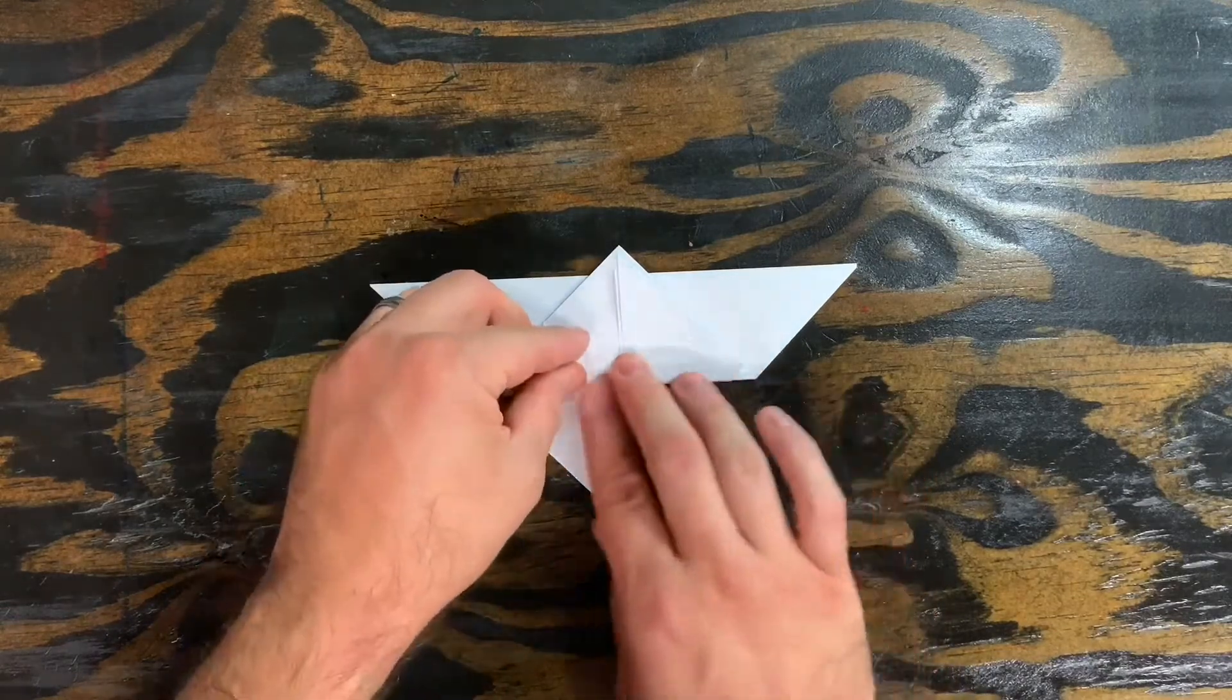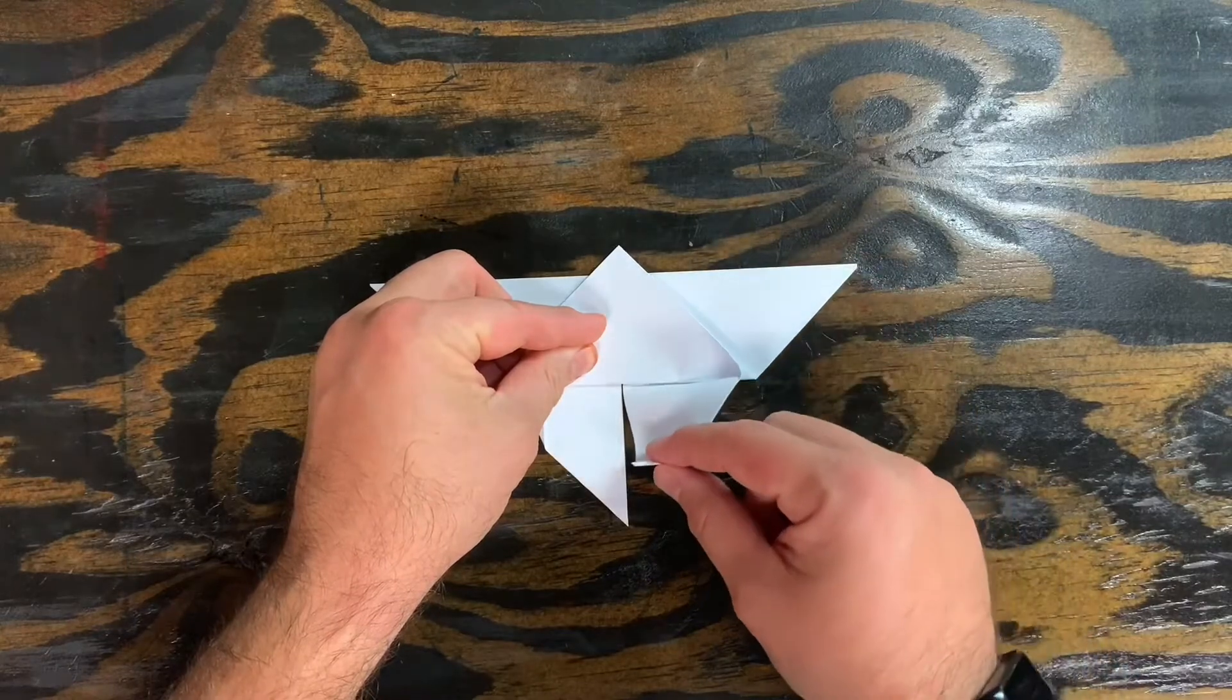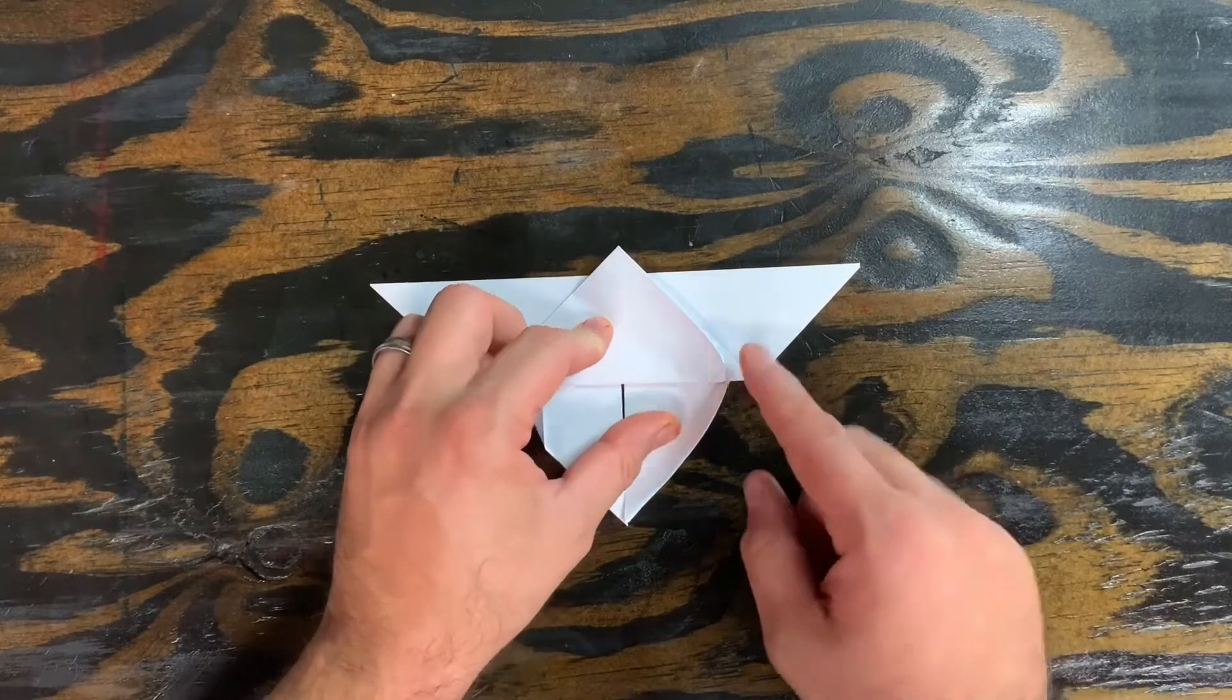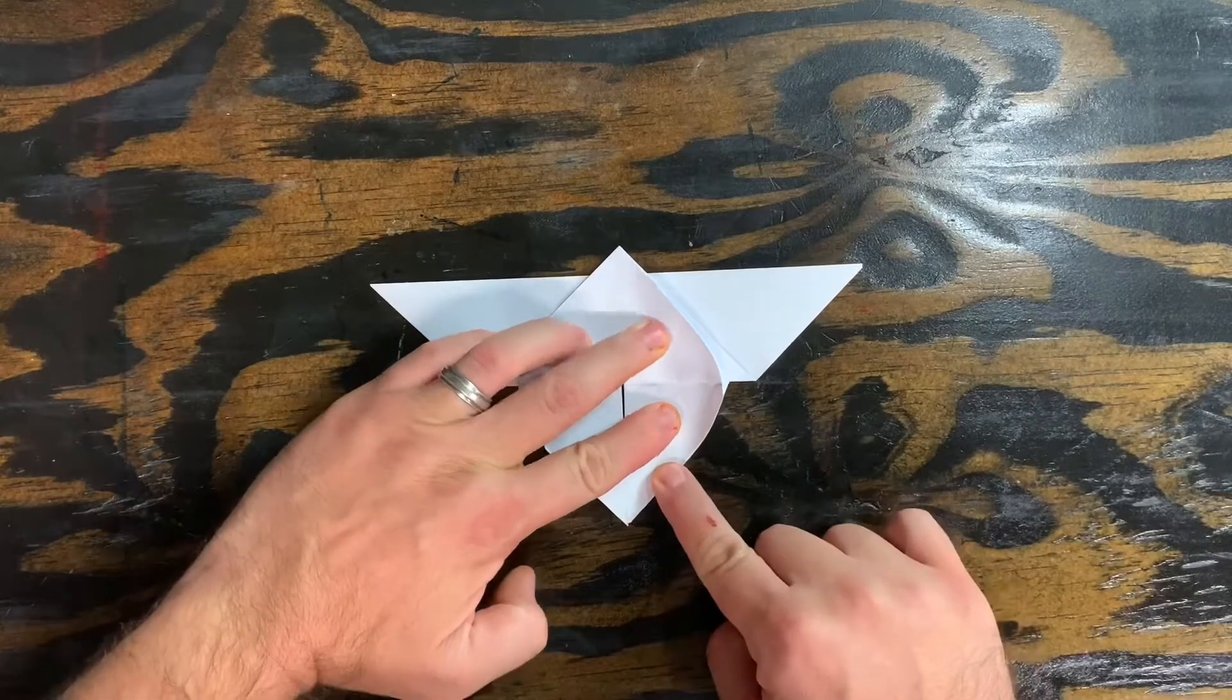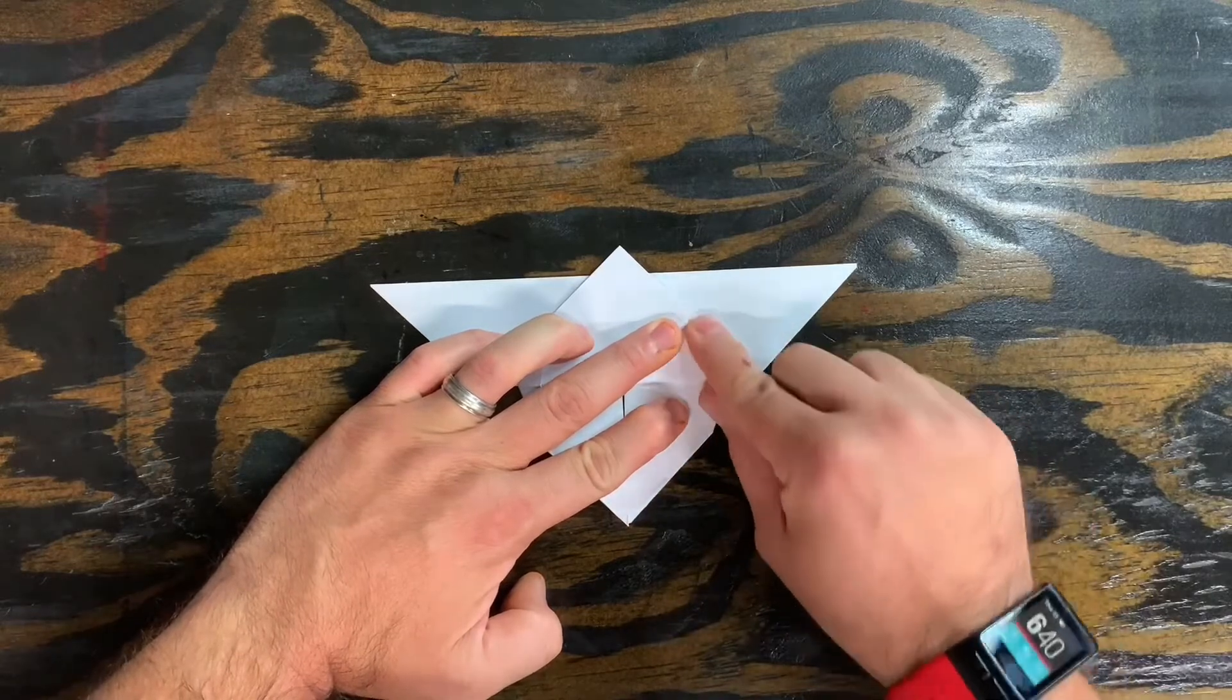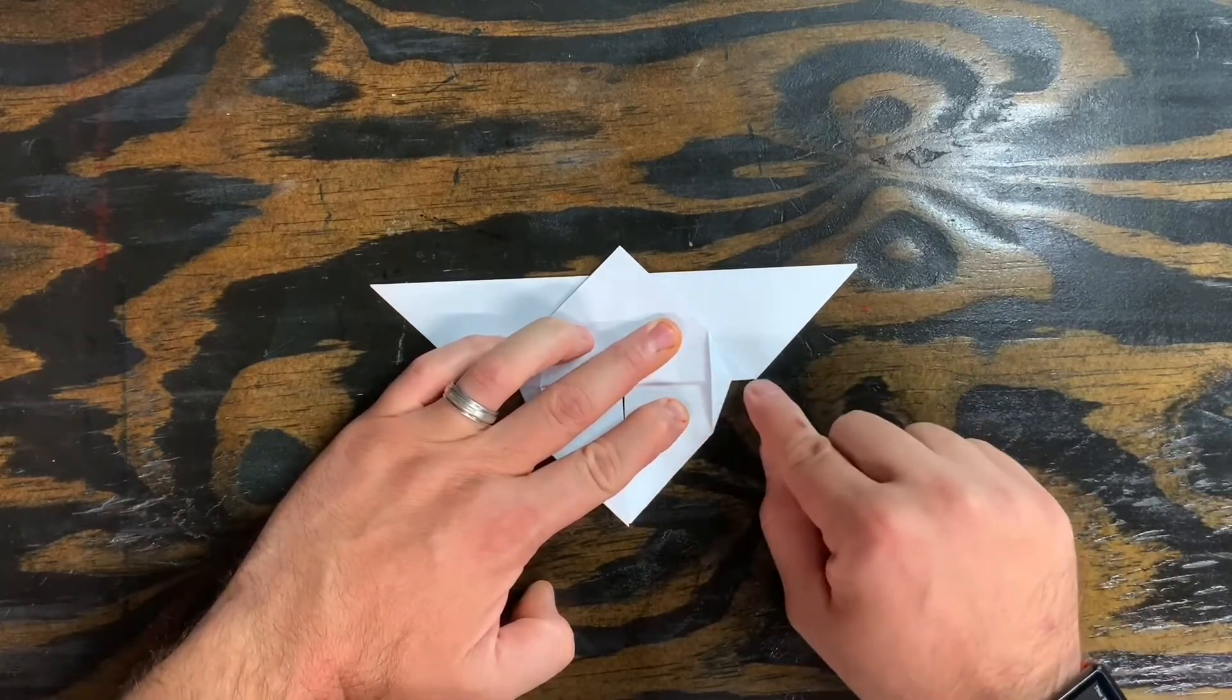We're gonna repeat that on the other side. So I'm gonna take this flap. I'm gonna bring it all the way down. When I bring it down this part right here pops up. So I'm going to put the wing all the way flat and then press down the bit that popped up. And again there's that space between the two wings.